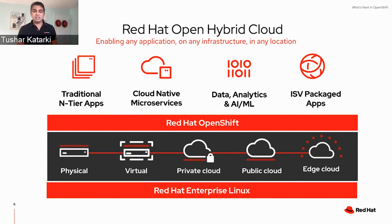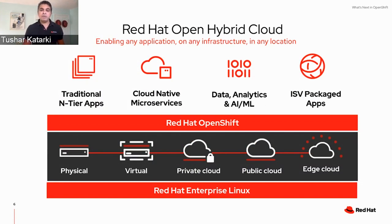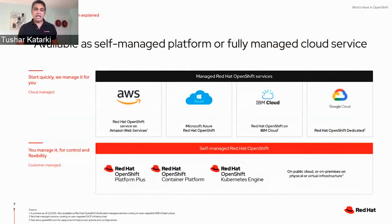As many of you know, our customers have innovated, competed, and have succeeded in creating value to their customers through applications built for the hybrid cloud. Those applications can range from traditional n-tier applications to more modern cloud-native microservices-based applications, encode more traditional business logic or rules, or more modern data analytics and AI, and can be for in-house developer applications or packaged applications from ISVs. No matter what, they have developed and deployed these applications across the hybrid cloud footprint — everything from a physical data center to a public cloud and to the edge. Red Hat OpenShift, built on Red Hat Enterprise Linux, has been the bedrock platform in this journey, and that continues to inform our roadmap and our future.